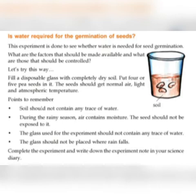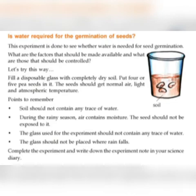Put 4 or 5 pea seeds in it. The seeds should get normal air, light, and atmospheric temperature.